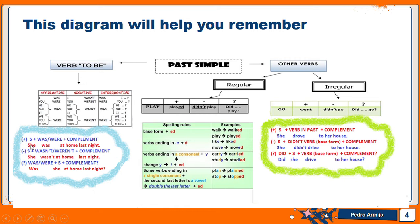Here is the structure. In the affirmative: subject, 'was' or 'were' depending on the pronoun, and complement. In the negative: subject, 'wasn't' or 'weren't,' and complement — for example, 'She wasn't at home last night.' In the question form, remember to change the place of the subject and verb: 'was' or 'were' comes first, then the subject, then the complement — 'Was she at home last night?' — in Spanish, '¿Estaba ella en casa anoche?'